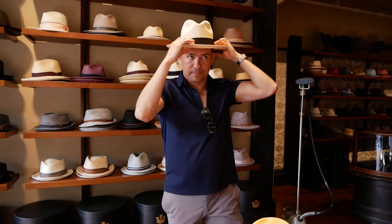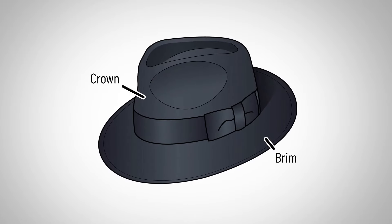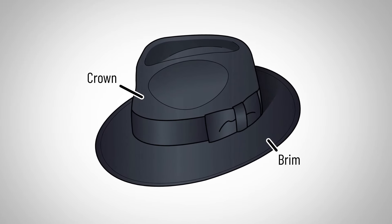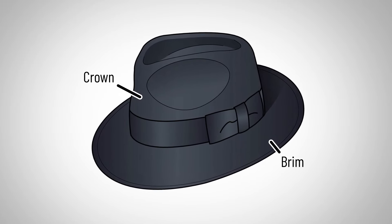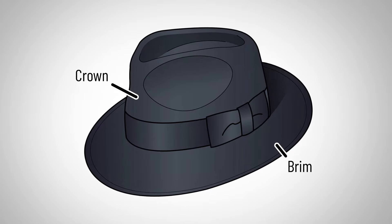Let's start things off by defining what is a hat. A hat is a covering for the head. Let's start with the crown — the crown right here. Notice that the crown has a shape.